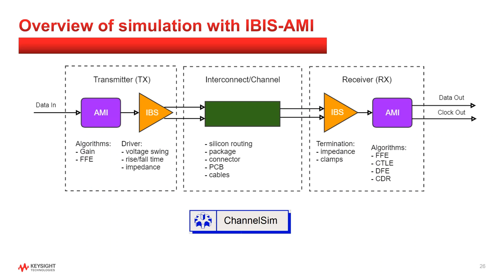What happens first is the EDA simulation tool solves for the impulse response of the transmitter IBIS plus channel plus receiver IBIS, and that together is considered the channel response. That channel response is combined next with the transmitter AMI behavior, and then finally the receiver AMI behavior to get a complete response. For details, let's take a closer look at the convolution-based channel simulation.